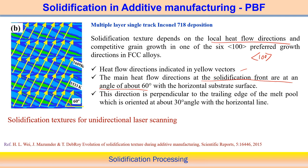With reference to the horizontal substrate surface, the maximum heat flow direction is maintained by the yellow vector, making approximately 60 degrees with the horizontal. The direction perpendicular to the trailing edge makes about 30 degrees with respect to the horizontal line.